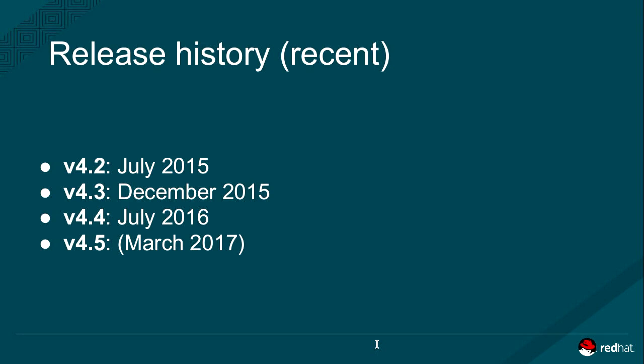A couple of years ago at Linux Conf AU in Auckland, I gave a fairly comprehensive talk about FreeIPA and where the project was at that point in time. Since then, we've had a few major releases and we're gearing up for the 4.5 release. I just want to recap some of the security-related features that have arrived in recent releases, and also some of the exciting things we're working on for the future.